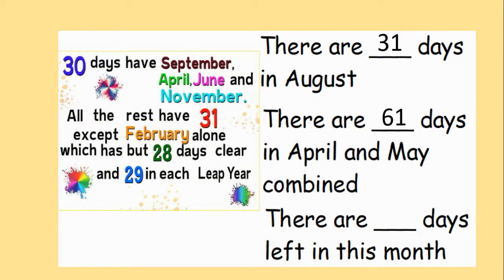Brilliant! There are 31 days in August. There are 61 days in April and May combined. You would have needed to find out how many days there are in April which is 30, how many days there are in May which is 31, and you would have needed to add the two numbers together which gives you 61. And there are four days left in this month. Well done.